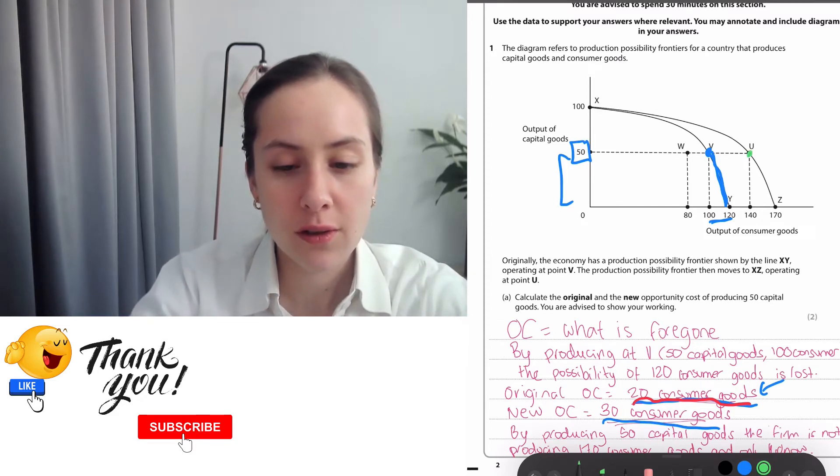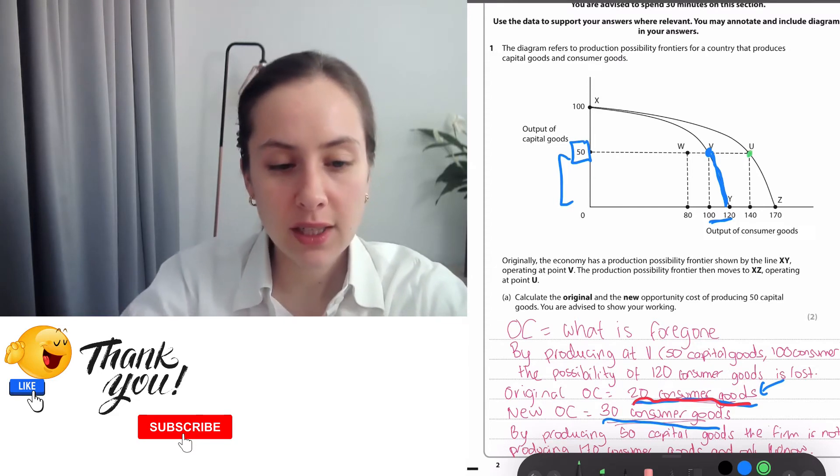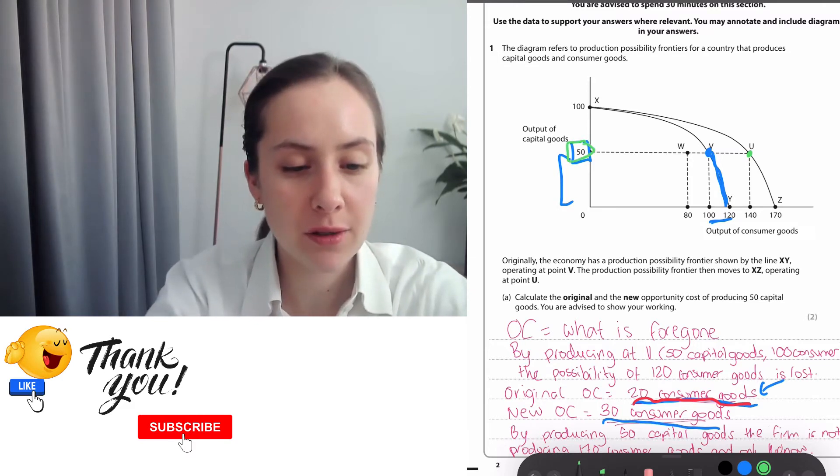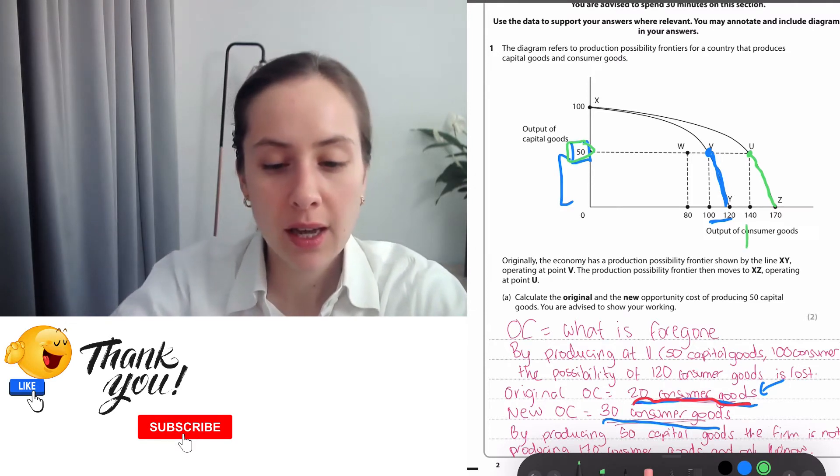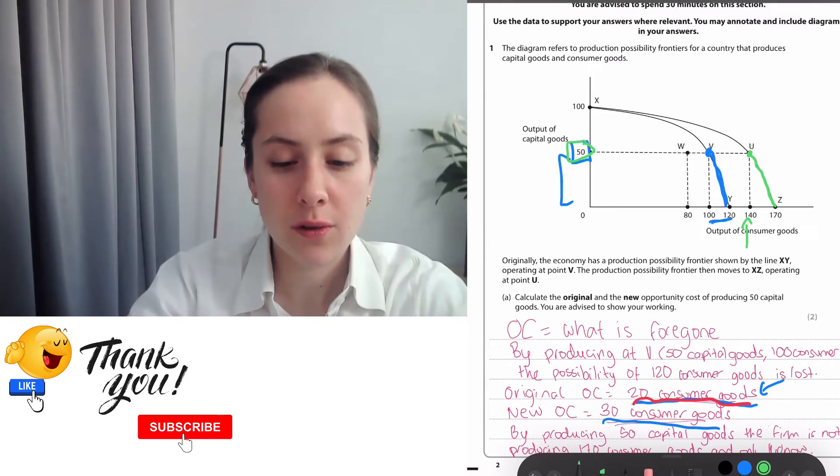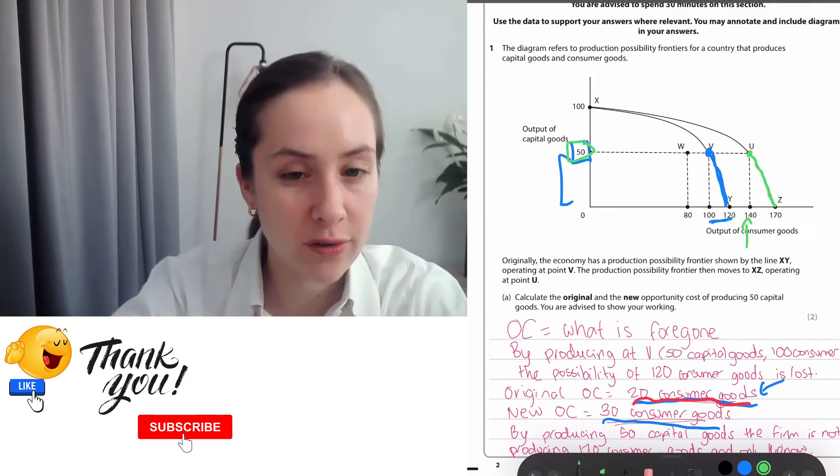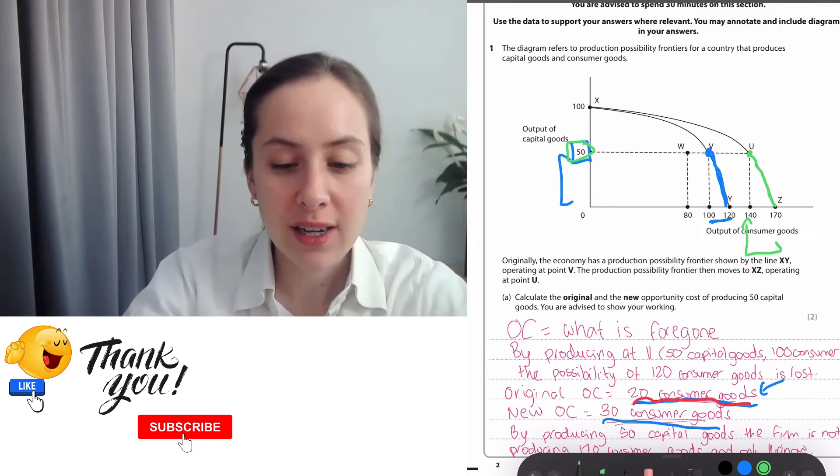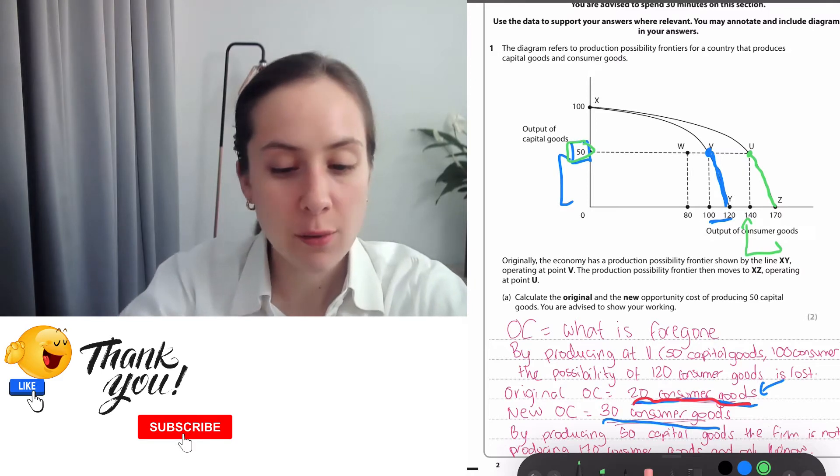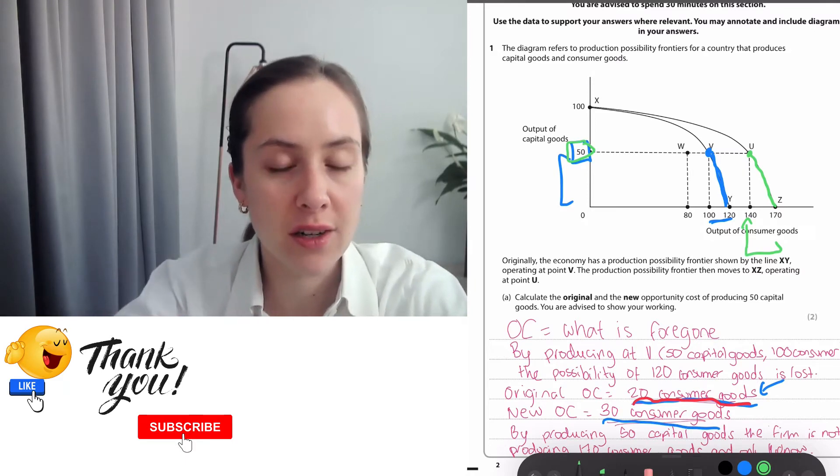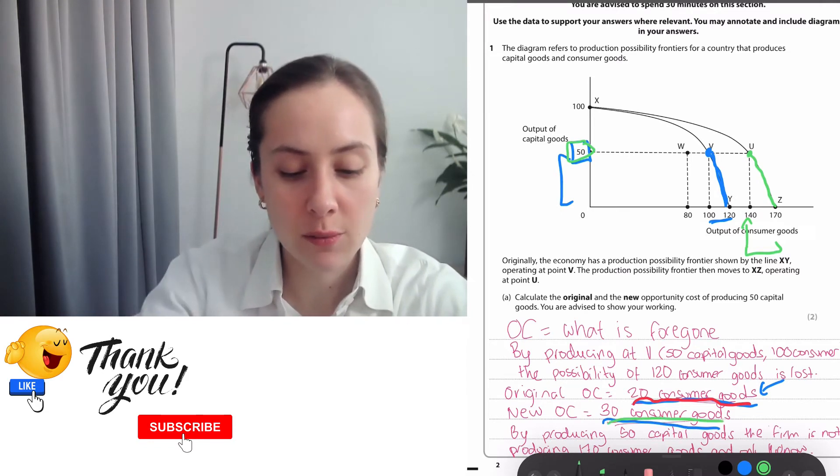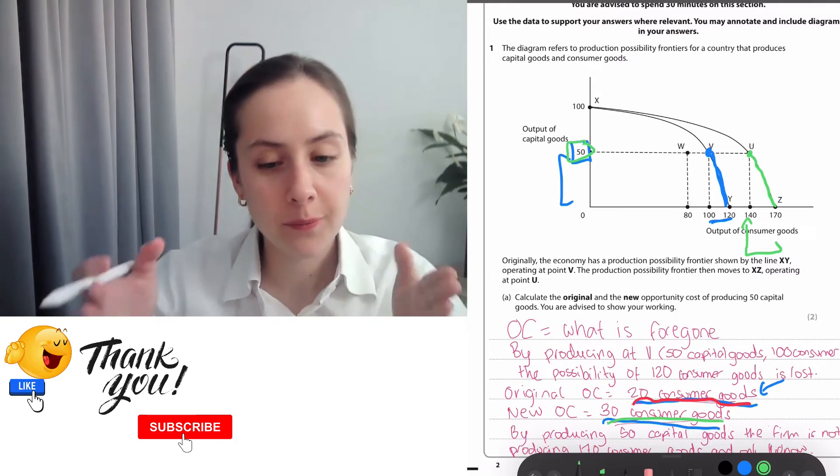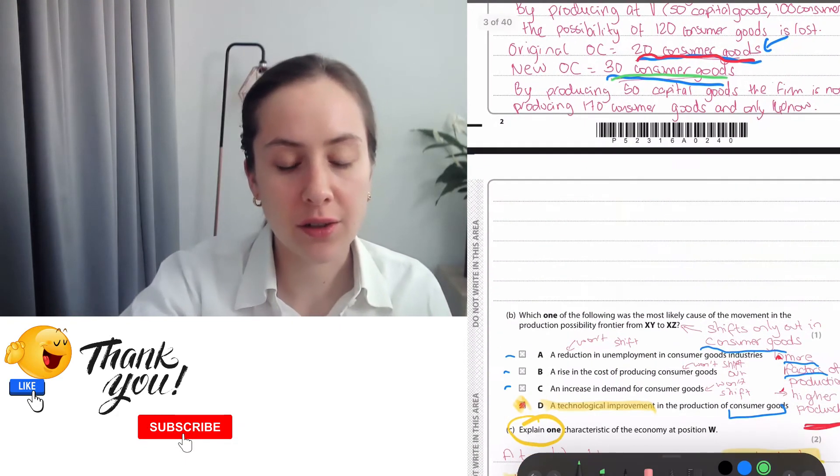Next up, we're told that we're at U, and again we're told that we have to produce 50 capital goods. So again, we can't produce anywhere on here that would be fewer capital goods than we need. And as a result, we are now only producing 140 consumer goods and we cannot consume anywhere between 140 and 170. So we've sacrificed that difference. We've sacrificed the opportunity of making 30 consumer goods between that 140 and that 170.